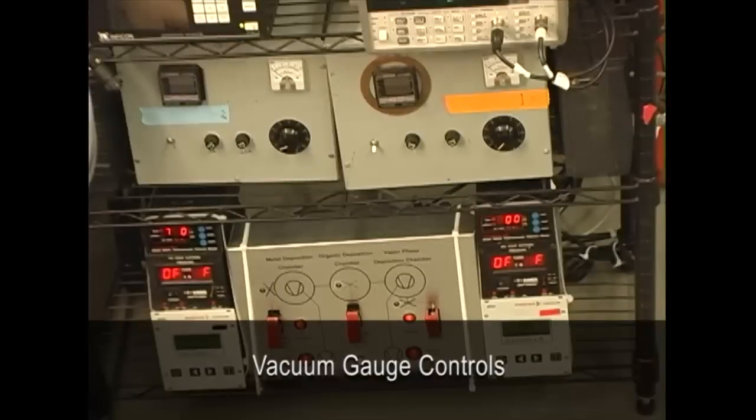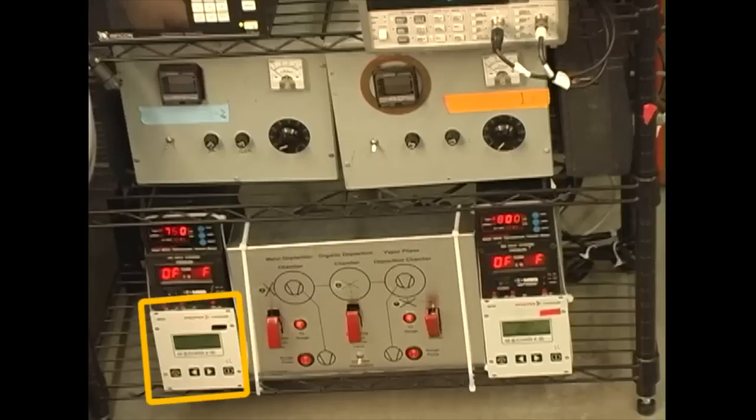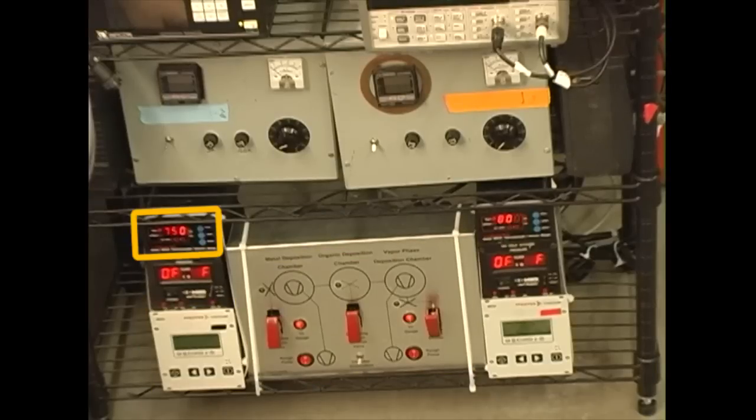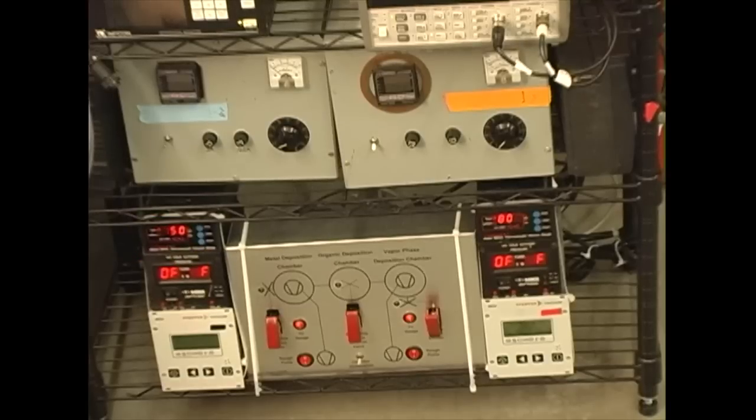This is the control center for building the devices. This switch controls the vacuum pumps - first a rough pump and then the turbo vacuum pump. There are two different vacuum gauges for low vacuum and high vacuum. At the next level is the temperature control for organic deposition.